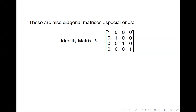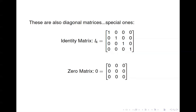Here's another diagonal matrix. This one has a name — we call it the identity matrix. It's a diagonal matrix because everything off the diagonal is 0. And the zero matrix is technically a diagonal matrix because everything off the main diagonal is 0.